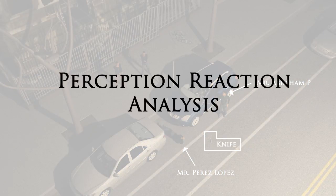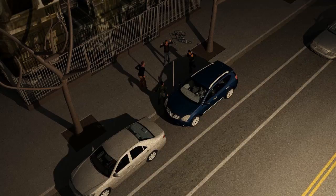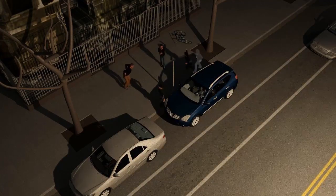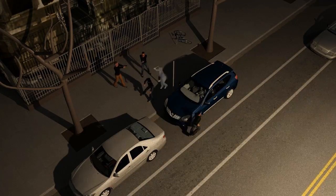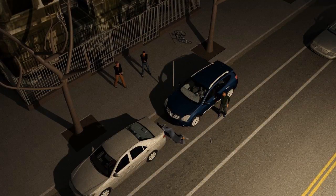He will demonstrate how there is a delayed reaction between perceiving danger and then reacting to the danger we just perceived, better known as perception-reaction time. We will effectively illustrate how even though Mr. Perez-Lopez was already turned away from Officer Rebele when the shots were fired, from Officer Rebele's perspective he is reacting to the danger he perceived one to two seconds earlier, which is represented by the gray figure in the following animation.